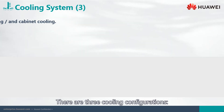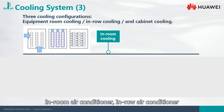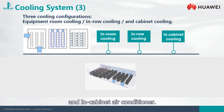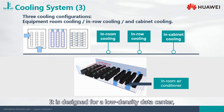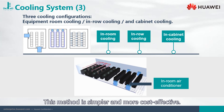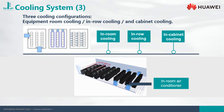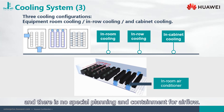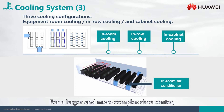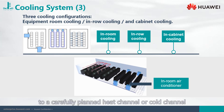There are three cooling configurations: in-room air conditioner, in-row air conditioner, and in-cabinet air conditioner. The in-room air conditioner aims to refrigerate the whole room. It is designed for a low-density data center where all cabinets share refrigeration redundancy. This method is simpler and more cost-effective for smaller computer rooms — the cabinet can be placed anywhere with no special planning or containment for airflow. For larger and more complex data centers, an elevated floor may be used to send air to a carefully planned heat channel or cold channel to guide the airflow and adapt it to the cabinet.